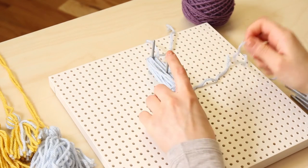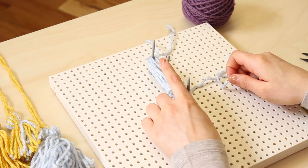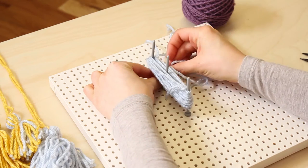Cut another strand for the tassel neck. Tie this strand around all of the strands at the middle peg.